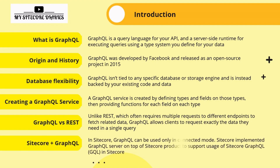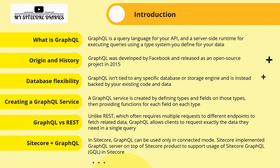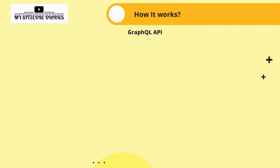In Sitecore, GraphQL can be used only in connected mode — we have already covered what connected and disconnected mode means. Sitecore implemented a GraphQL server on top of the Sitecore product to support GraphQL usage, and it is built on top of the Content Search API. Sitecore provides this feature so you can utilize GraphQL to manage and access your data efficiently.